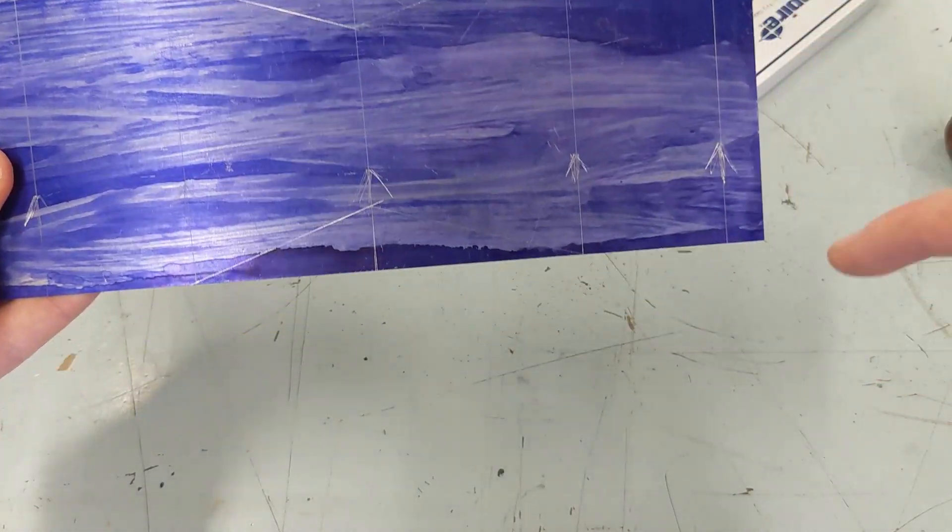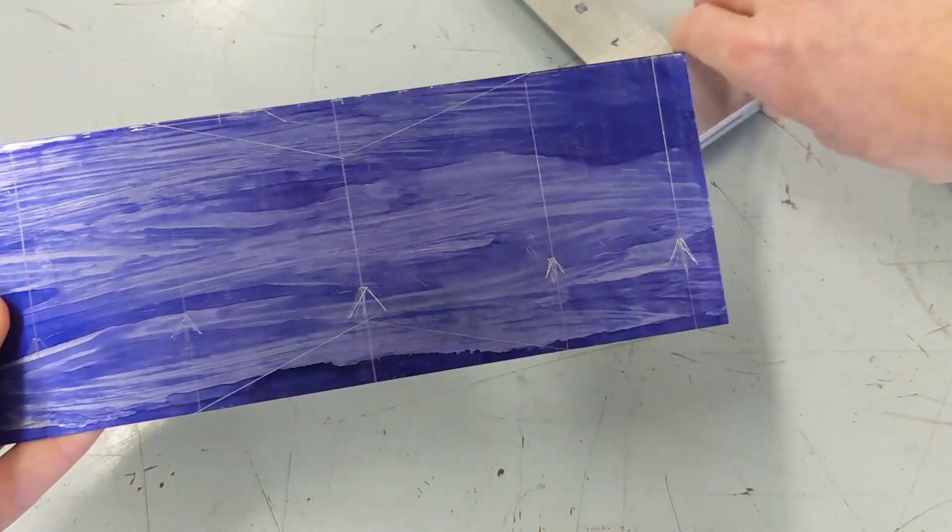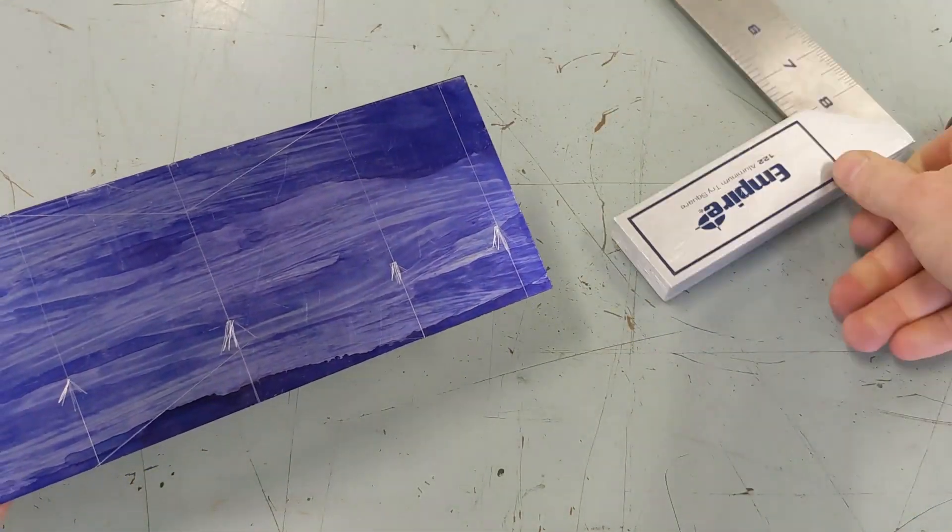Then all we have left is to mark our corners at 45s. We'll do that with our tri-square and then we'll be ready to cut.